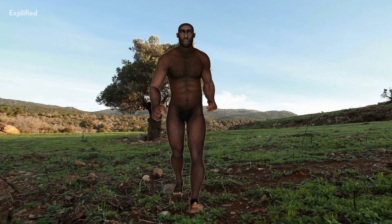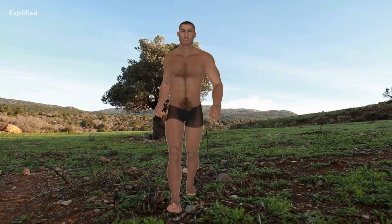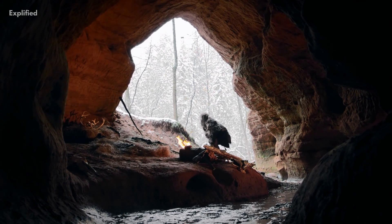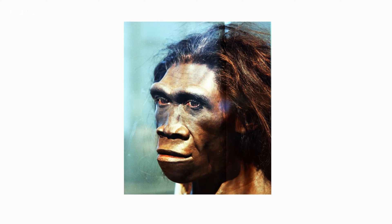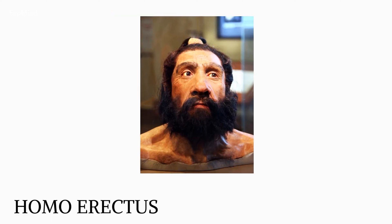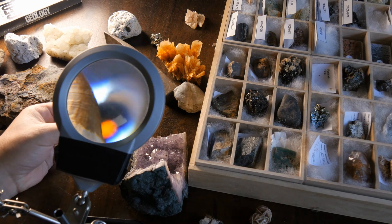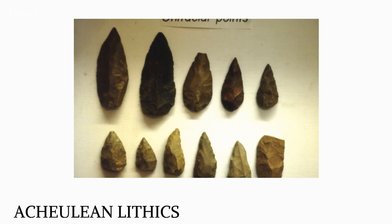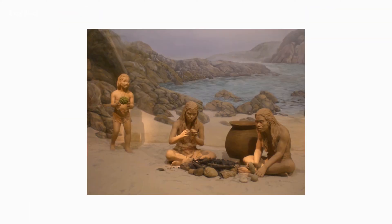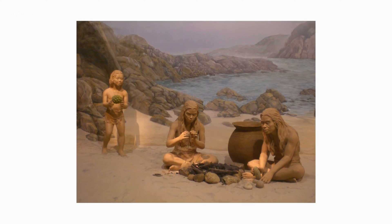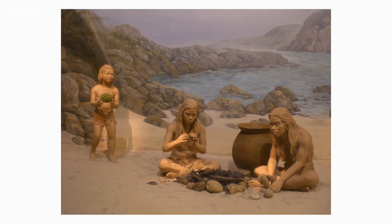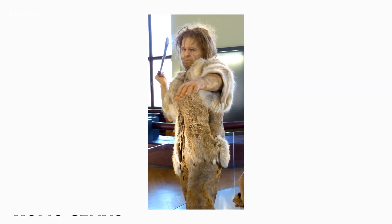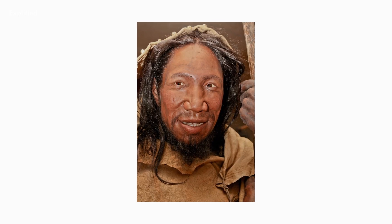One of the most significant events of this era is the evolution of humans. Paranthropus species, as well as early human progenitors, were still present at the start of the Pleistocene, but they vanished during the Lower Paleolithic, leaving Homo erectus as the only hominin species known in fossil records throughout much of the Pleistocene. Some 1.8 million years ago, Acheulian lithics appeared alongside Homo erectus, replacing the more rudimentary Oldowan industry. Around 300,000 years ago, the Middle Paleolithic saw more diverse speciation within the Homo genus, including the development of Homo sapiens.